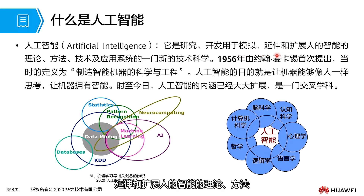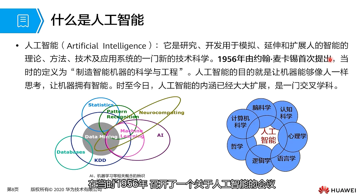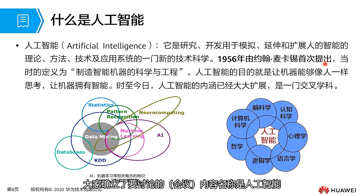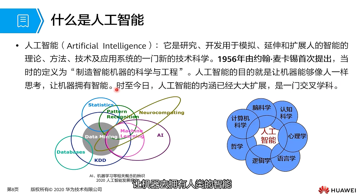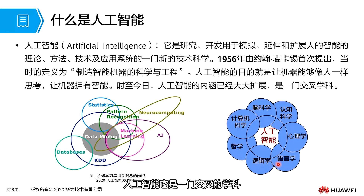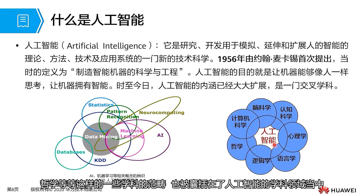Artificial intelligence is a new scientific technology in the field of application systems, first proposed by John McCarthy in 1956. In 1956, a conference on artificial intelligence was held at Dartmouth College, where the topic established for discussion was artificial intelligence. One purpose of AI is to enable machines to think like humans. Up to this day, the connotation of AI has greatly expanded — it is an interdisciplinary subject incorporating computer science, neuroscience, cognitive science, psychology, logic, linguistics, and philosophy.